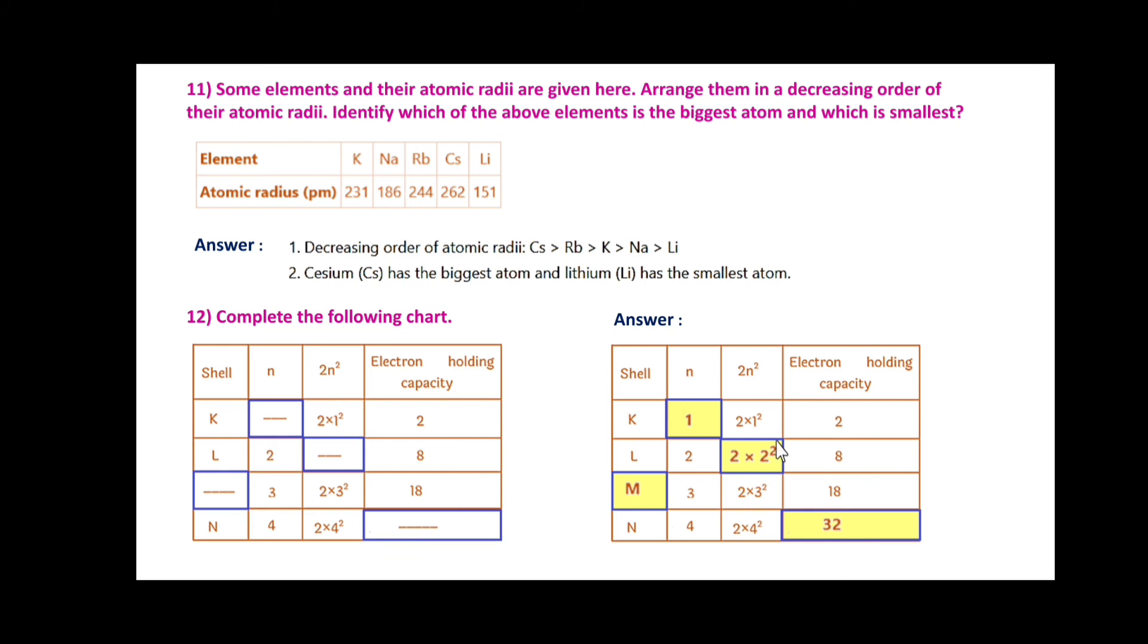Second shell L, N = 2, 2×2² = 8. Shell M, N = 3, 2×3² = 18. Shell N, N = 4, 2×4² = 32.